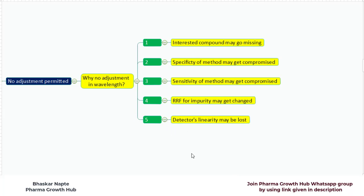Point number 5 is the detector's linearity may be lost. If the response is very low or very high at the changed wavelength, what is the guarantee that your detector still lies in the range of linear response? Your response may get saturated at the selected or changed wavelength. Hence, there can be possibility of failure in linearity. The change in detector wavelength can also compromise your detector's linearity.